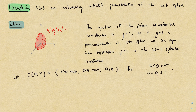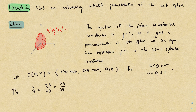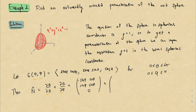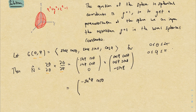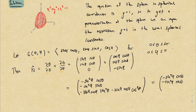Now let's compute the normal vector. Because I wrote the variables in the order θ, φ, the orientation of this parameterization is defined by the cross product θ-derivative cross φ-derivative — we have no choice, that's the definition. I compute the θ derivative, then the φ derivative, take their cross product. In the z component I can factor out −sinφ cosφ and get sin²φ + cos²φ = 1, simplifying that term slightly.